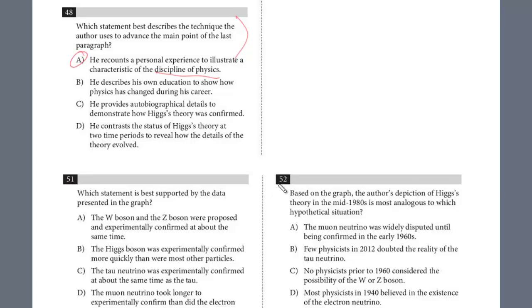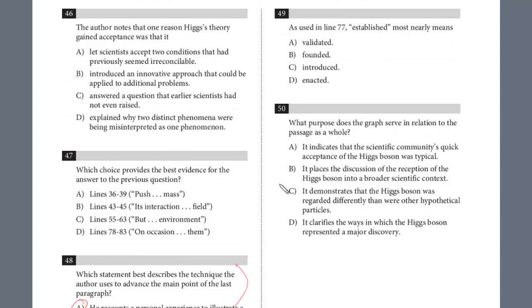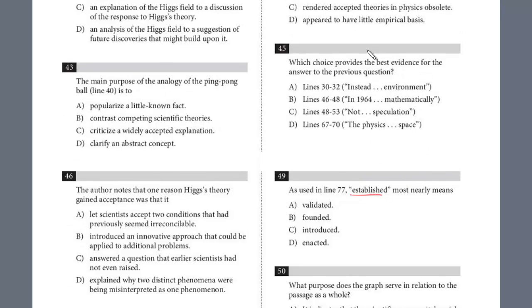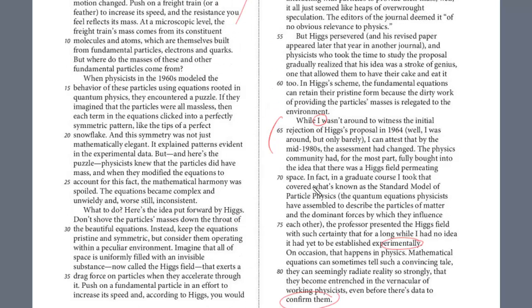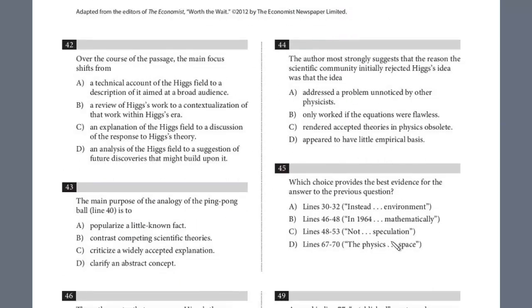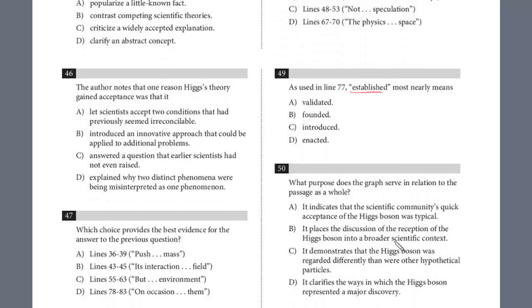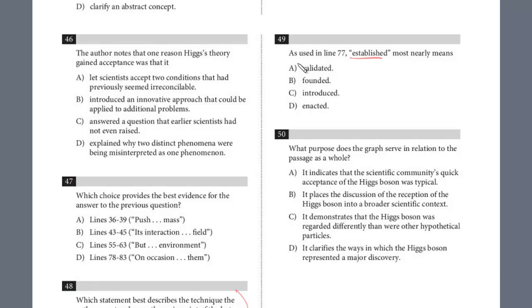Let's take a look at question number 49. This is a vocab in context, in line 77, what does established mean? So we're just going to predict in 77 what established means. And this is the sentence, the paragraph we just read. The professor presented the Higgs field with such certainty for a long time, I had no idea it had yet to be established experimentally. So established means proven here, right? This is the theory, he didn't know that it had yet to be like proven with data. And what's another word for proven? It's validated, right? Validated or confirmed, the answer is A.